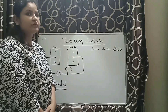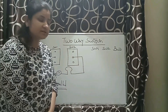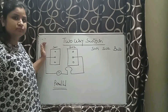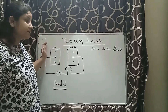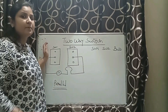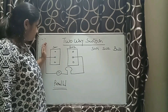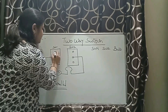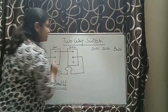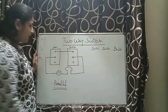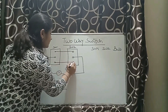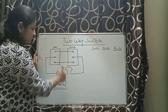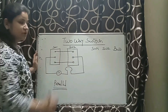The first type of connection I am going to discuss is the parallel connection. In parallel connection, the first terminal will be connected with the first terminal and the last terminal will be connected with the last terminal. This is known as parallel connection.